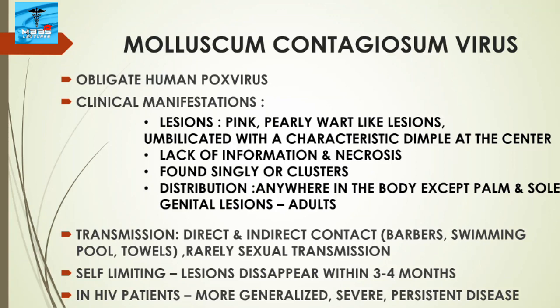Regarding transmission, children are commonly affected and acquire infection by direct and indirect contact, such as through barbers or common use of towels and similar items. Rarely, sexual transmission has been reported in young adults. It is self-limiting — the lesions disappear in three to four months with no systemic complications, but sometimes lesions may persist for three to five years. In HIV patients, the disease is more generalized and severe.